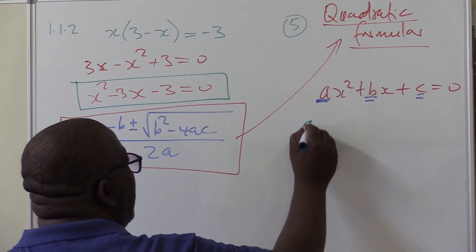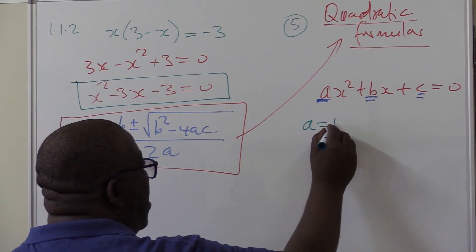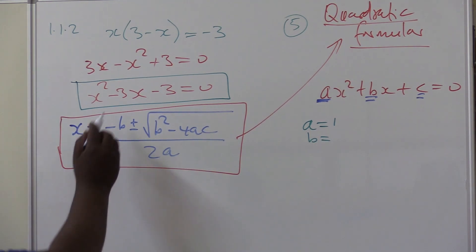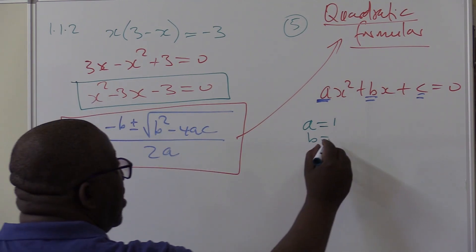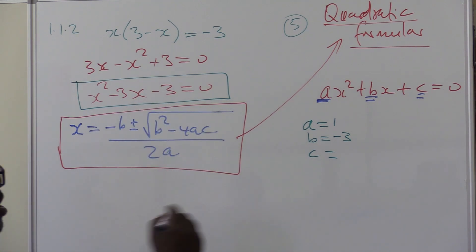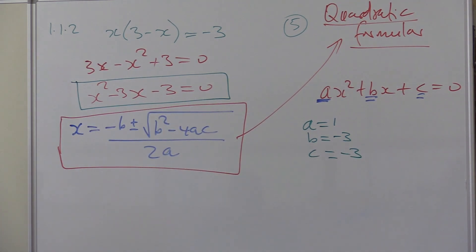Let's write it down. The value of A in this particular problem. A is 1X squared. So A is 1. What is B? B is not 3, but it is minus 3. Make sure that you don't leave this one out. So it is minus 3. And the constant term in this particular case is also minus 3. I've got my A, I've got my B, and I've got my C. I substitute.